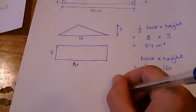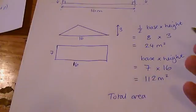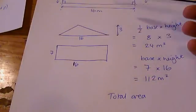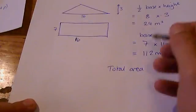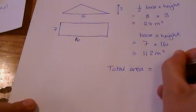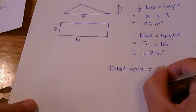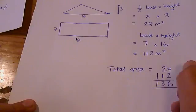So the total area—remember, you have to add them up to find the total area of the compound shape. The total area is 24 plus 112, which is 136 meters squared.